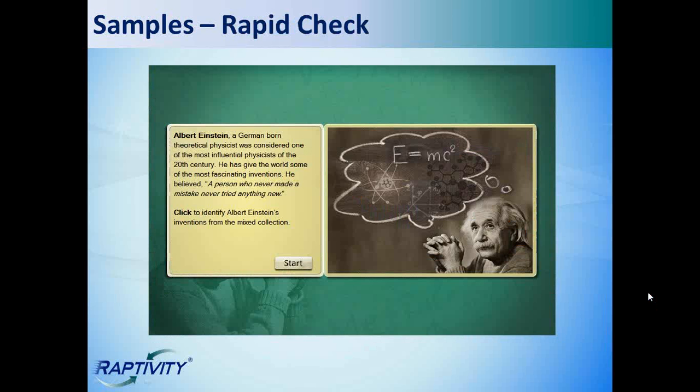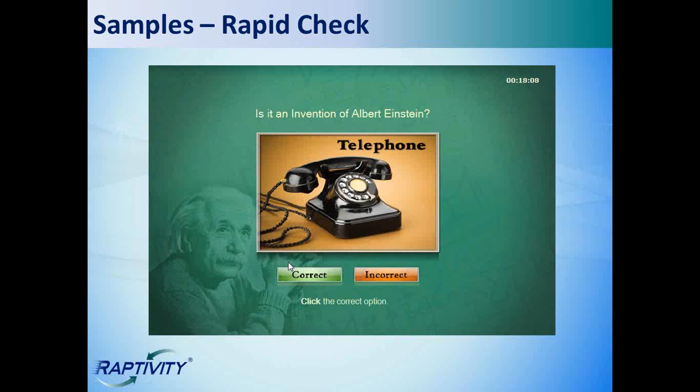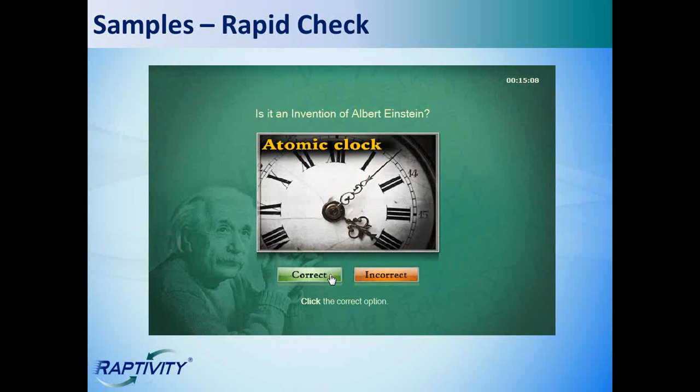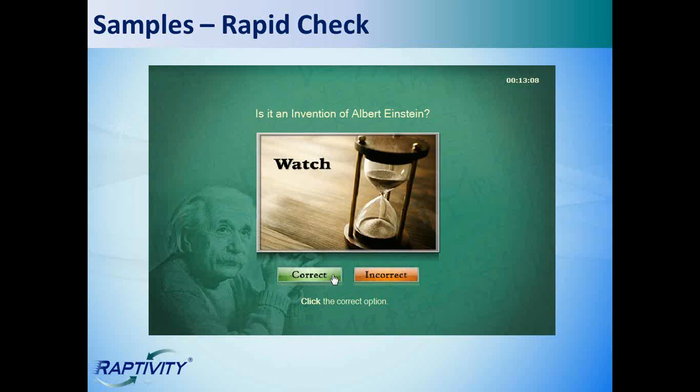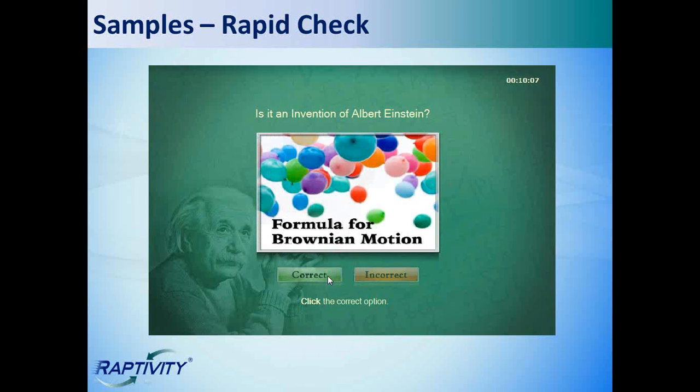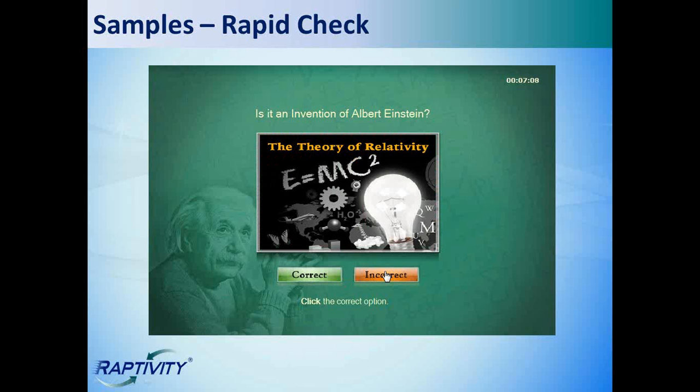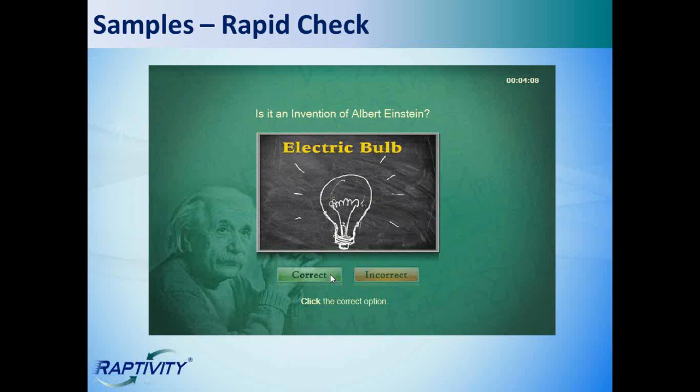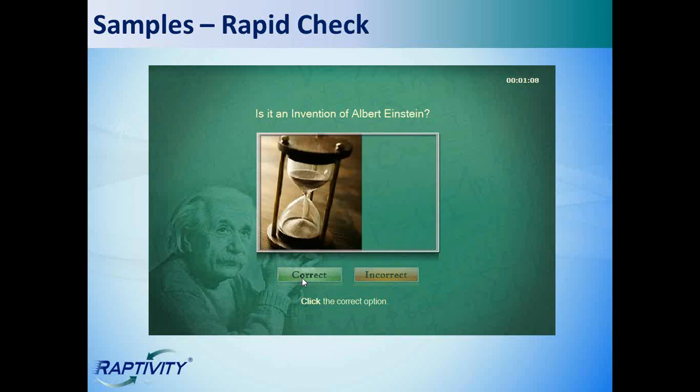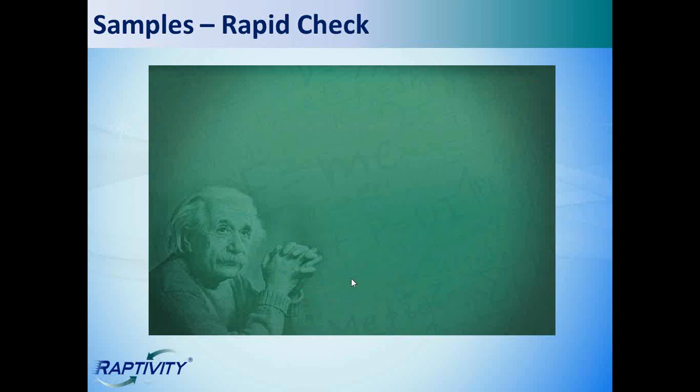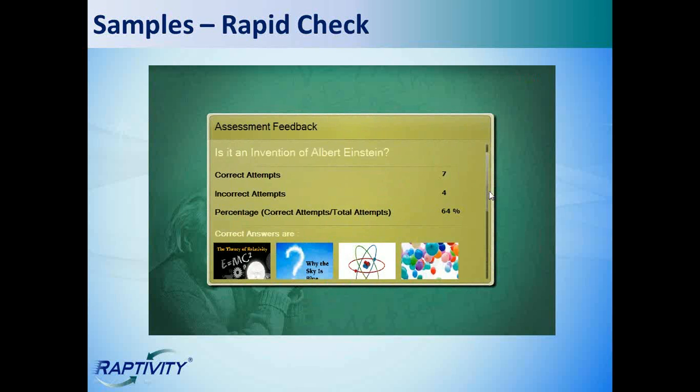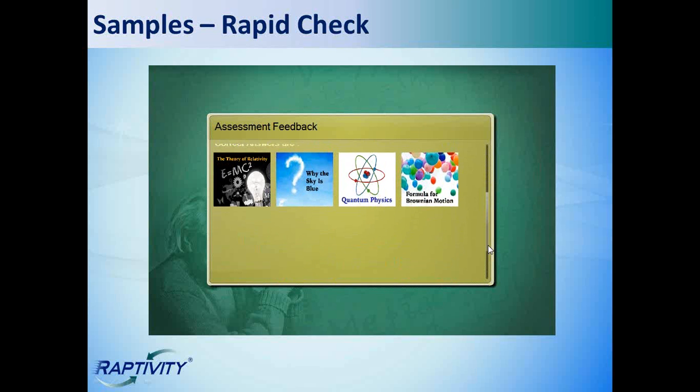Rapid check. This is a fun way to present a brief assessment. Now there are a series of questions that will rapidly appear one after the other. And our topic here is identifying inventions of Albert Einstein. So we'll move through here and answer our questions. And once the time is up, I'll immediately see my results. And you'll see that these results show the correct and incorrect percentages, as well as what the correct answers are. Now when you customize this template, you can choose to have immediate or delayed feedback given.